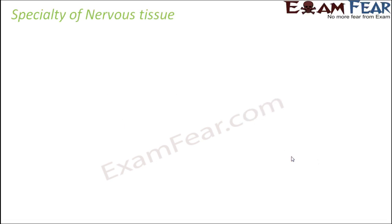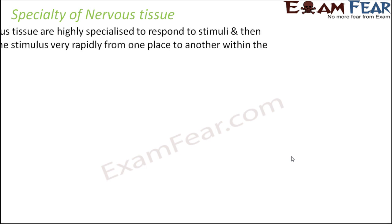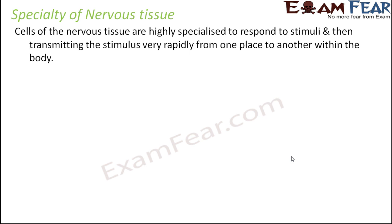Let us start with the speciality of nervous tissue — how is it different from all other types of tissue? They are doing something very different: the job of thinking and manipulating things. Cells of the nervous tissue are highly specialized to respond to stimuli and then transmit the stimulus very rapidly from one place to another within the body.